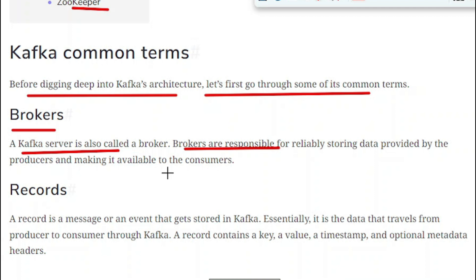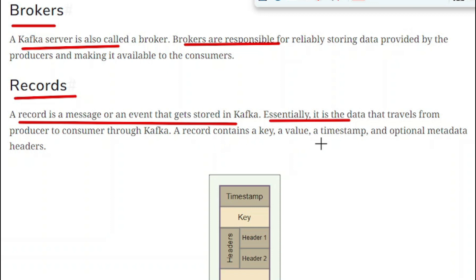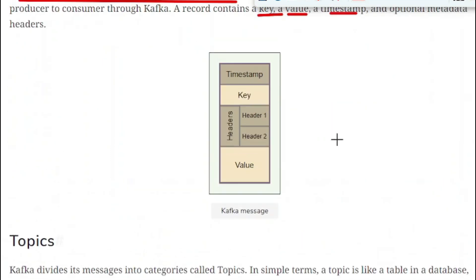Once the consumer is available and ready, the broker will send the message to the consumer. The second term is records. A record is the message or an event that gets stored in Kafka. It is essentially the data that travels from the producer to the consumer through Kafka. A record contains the key, a value, a timestamp, and optional metadata headers.